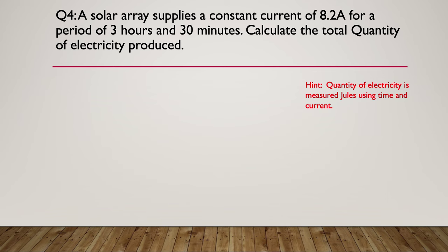Here's your hint. Quantity of electricity is measured in joules using time and current. And here's the answer. The formula actually is Q. We use the uppercase Q equals the quantity of electricity. So Q is equal to a current in amps multiplied by the time in seconds. Remember the SI unit for time is the second. So Q in this particular case is 8.2, 60 times 60 times 3 gives us our seconds for our three hours plus another 30 times 60 for our seconds for 30 minutes. We add those together and then we multiply by 8.2 and you'll get 103,320 joules of energy.